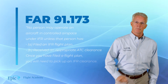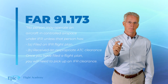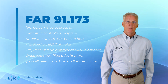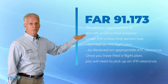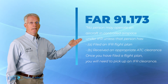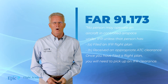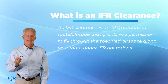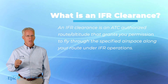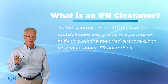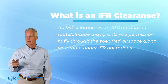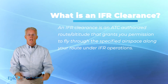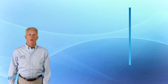Now, what about those clearances? Let's go back to that first slide. FAR 91.173: no person may operate an aircraft in controlled airspace under IFR unless (A) they filed a flight plan — that's what I was just doing on the telephone — and (B) has received an appropriate ATC clearance. An IFR clearance is ATC authorization to fly a particular route and altitude through a specified airspace.